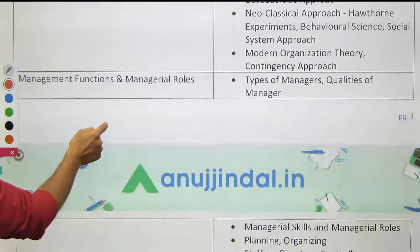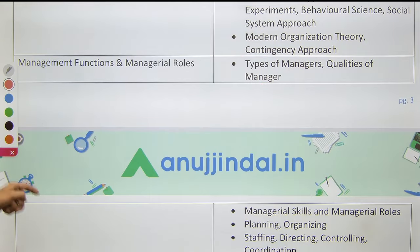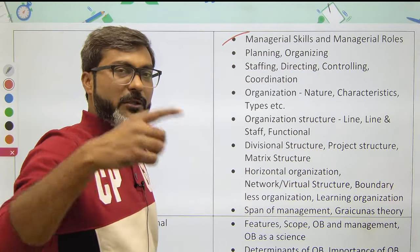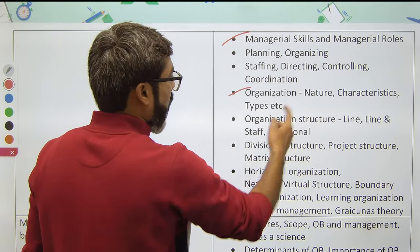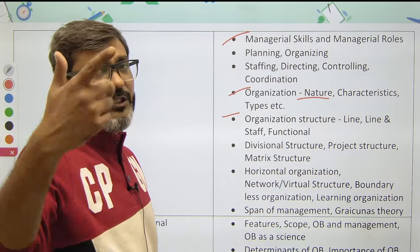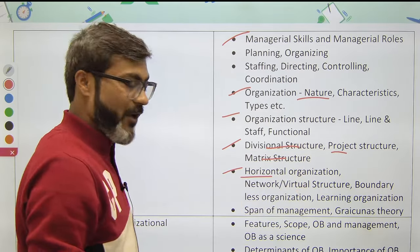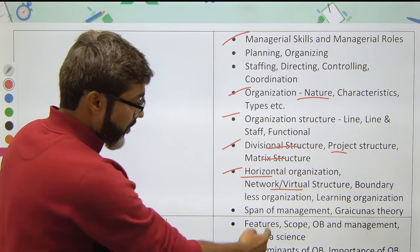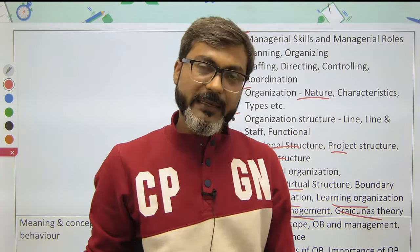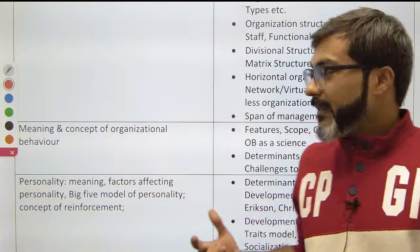For Management Functions and Managerial Roles, cover: types of managers, quality of managers, managerial skills, managerial roles, planning, organizing, staffing, and controlling. For Organization, cover: nature, characteristics, and types; organizational structures including line organization, line and staff organization, divisional structure, project structure, matrix structure, horizontal organization, network or virtual structure, boundaryless organization, learning organization, span of management, and Graicunas' theory.